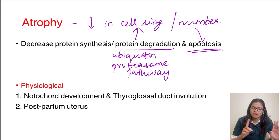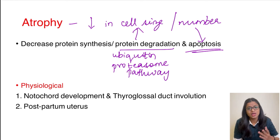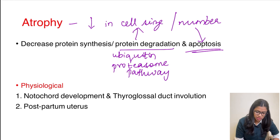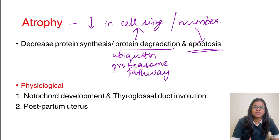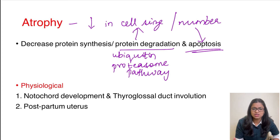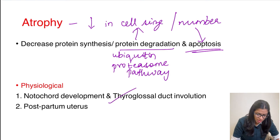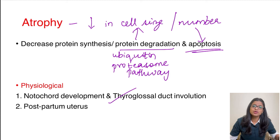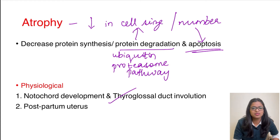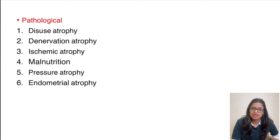The common physiological causes of atrophy share examples with apoptosis. For instance, the notochord is present during embryonal development and involutes post-birth; the thyroglossal duct also undergoes involution. Both revert to normalcy through atrophy. Similarly, a post-gravid uterus must involute back to its original size after delivery — this also happens by the process of atrophy.